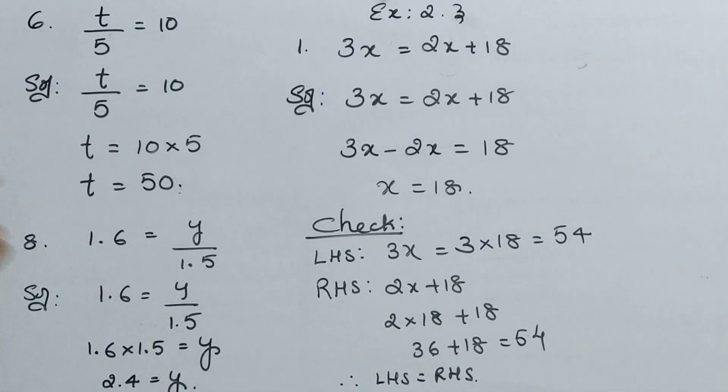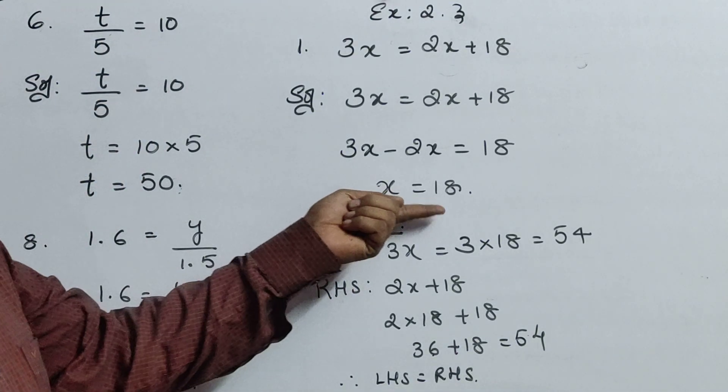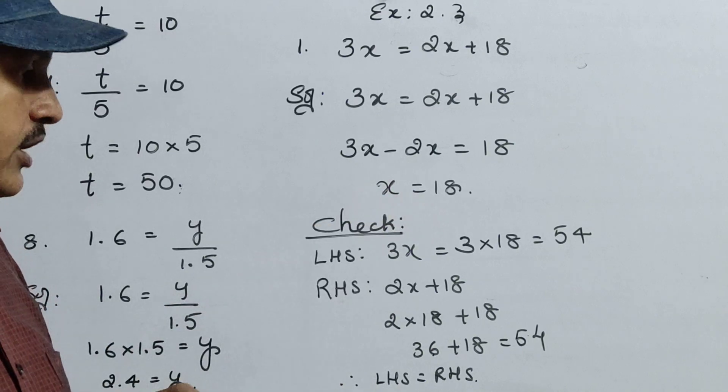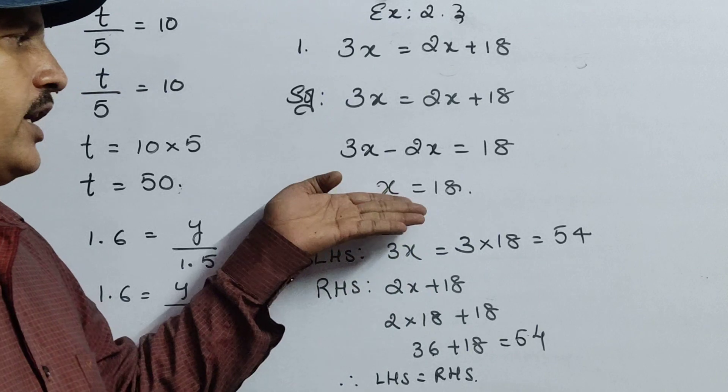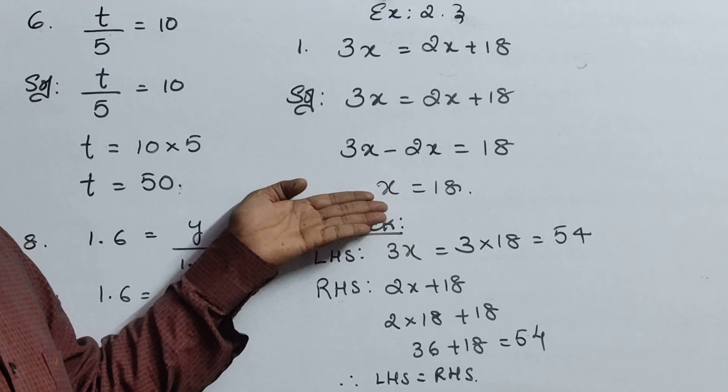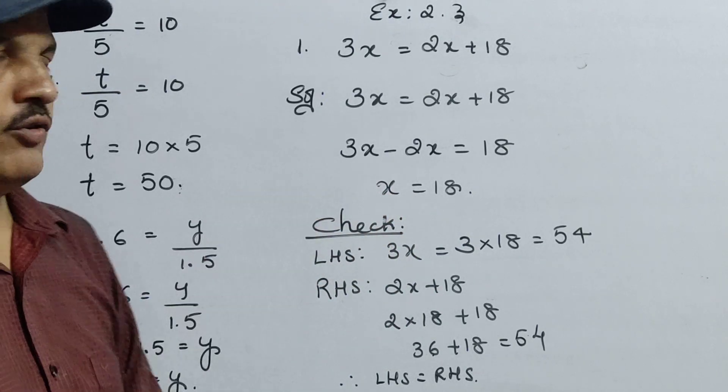Now RHS: 2x plus 18. That is 2 into x, that is 2 into 18 plus 18. 2 eighteens are 36 plus 18. So 8 plus 6 is 14, 4 plus 1 is 5. So 54. LHS and RHS you got both 54. Therefore LHS equals to RHS. You have to check now, that means whether your answer is correct or not. If you did not get both LHS and RHS same answer, you were somewhere here only you did the wrong.